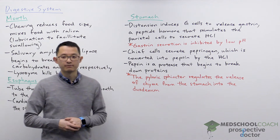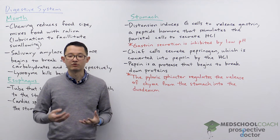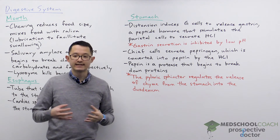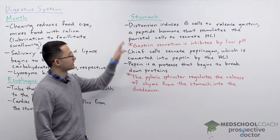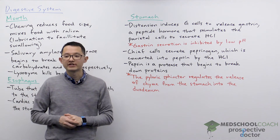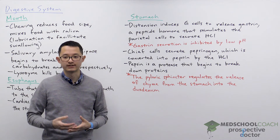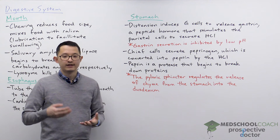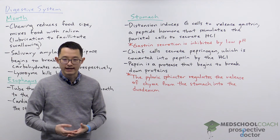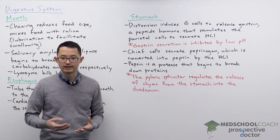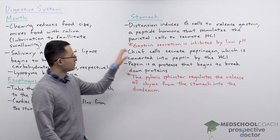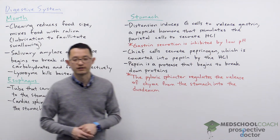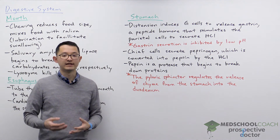The stomach is important for the digestion as well as the storage of food. When food enters the stomach, this distention causes G cells in the stomach to release gastrin. Gastrin is a peptide hormone that acts on parietal cells in the stomach to release hydrochloric acid. The secretion of gastrin is inhibited by the presence of acid or low pH in the stomach — that's an example of negative feedback — because we don't want the stomach to become too acidic, otherwise it might develop ulcers.